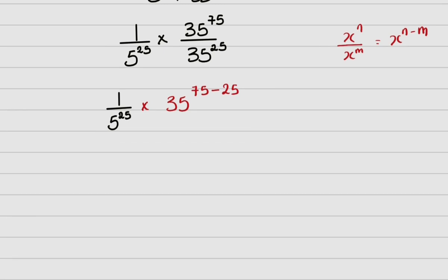So I now have one over 5 raised to power 25, times 35 raised to power 50, which I can write as 35 raised to power 50 all over 5 raised to power 25.